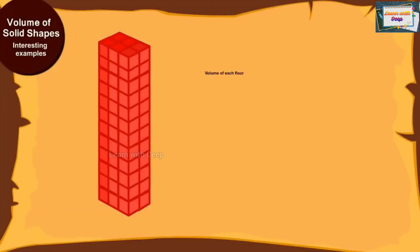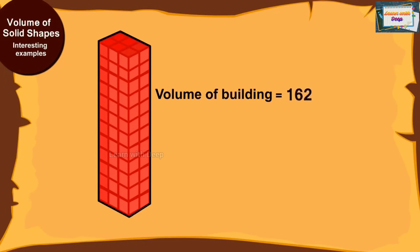The volume of each floor of the building is equal to 162 cubic meters, and there are 12 such floors in the building. This would mean the volume of the entire building will be 162 multiplied by 12, that is, 1,944 meters cubed.